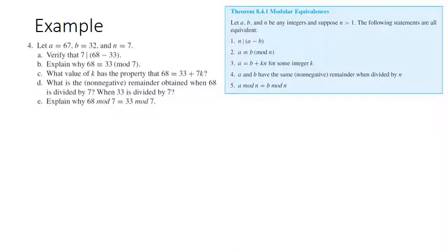Now that I've calmed my cat down, let's look at this example. We're going to look at a is 67, b is 32, and n is 7, and verify that all five of the statements in the theorem are true in this case.